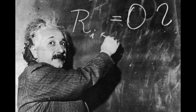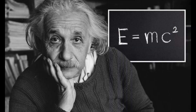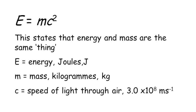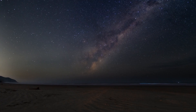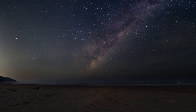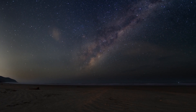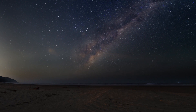Relativity explains how gravity works. You may have seen this before: E equals MC squared. You can think of E as energy, M as mass, and C as the speed of light. If you're trying to understand relativity, it's helpful to know what these symbols stand for.